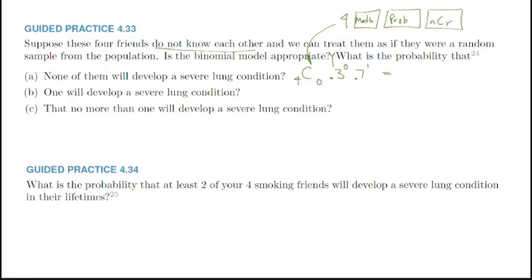Note: 0.7 must be raised to the fourth power (not the zero), since that represents the number of failures. So: 4 nCr 0 × 0.3^0 × 0.7^4 = 0.2401. There is a 24.01% chance that none of them will get a severe lung condition.